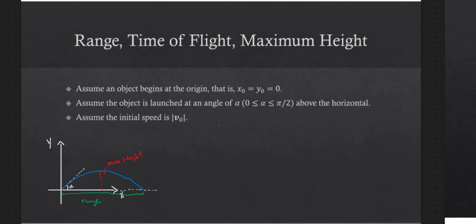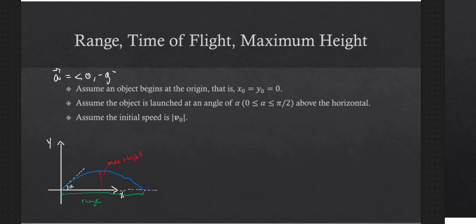The idea here is that the only force acting on our object after it's been launched is a gravitational field, and so our acceleration vector is a constant (0, -g). I'm keeping this just as g so we can change this depending on whether we're working in meters per second or feet per second. So we have this constant acceleration on our object as it moves along its trajectory.